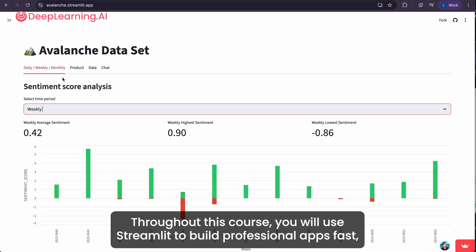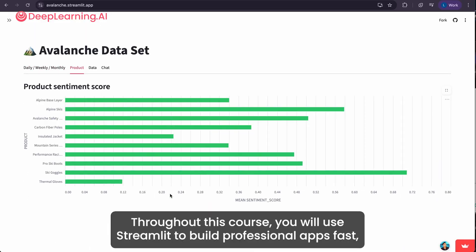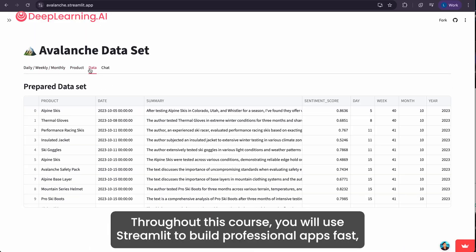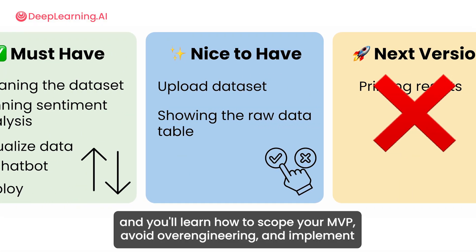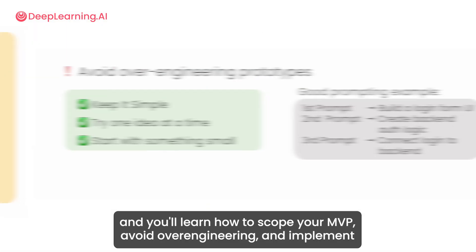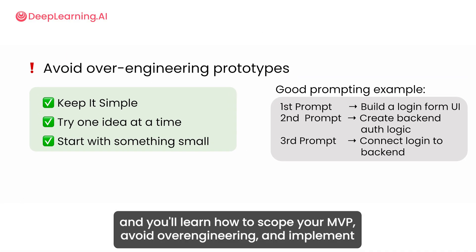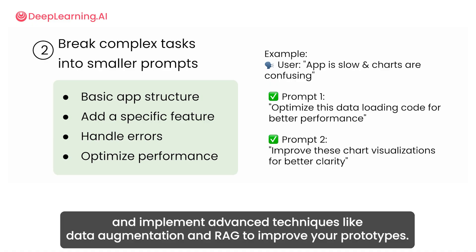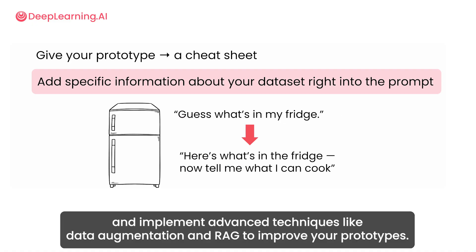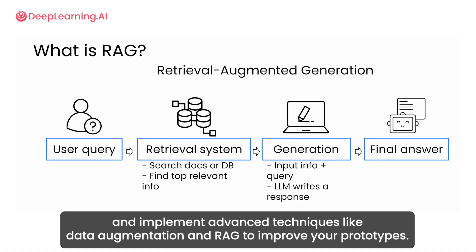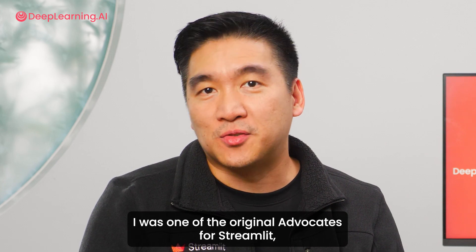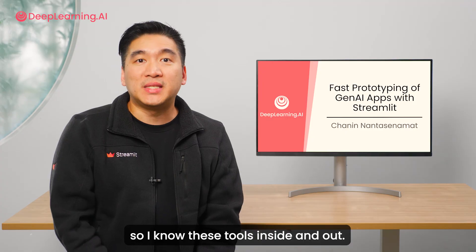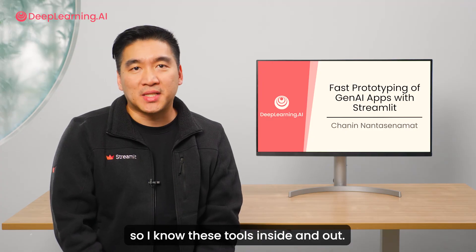Throughout this course, you will use Streamlit to build professional apps fast. You'll learn how to scope your MVP, avoid over-engineering, and implement advanced techniques like data augmentation and RAG to improve your prototypes. I was one of the original advocates for Streamlit, so I know these tools inside and out.